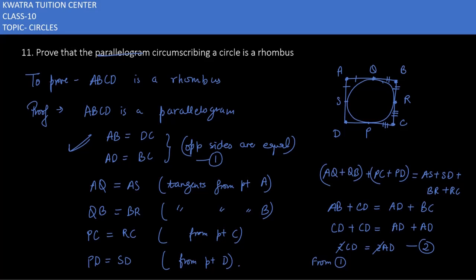So yes, from these three, from equation one and equation two, we can say all the sides are equal. From one and two we can say that AB is equal to BC, BC is equal to CD and DA. Then in the end you can write ABCD is a rhombus, as all sides are equal it will be a rhombus.